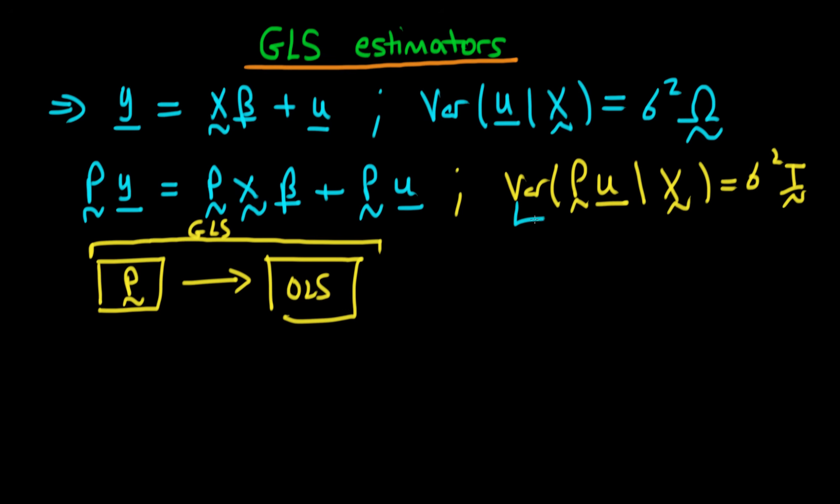Well, what we want is that the variance of Pu, in other words our transformed error, should be equal to sigma squared times the identity matrix I. So what we can do is we can actually expand the variance of P times u given X.